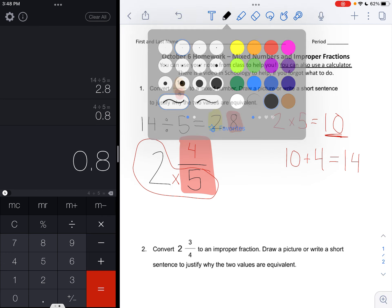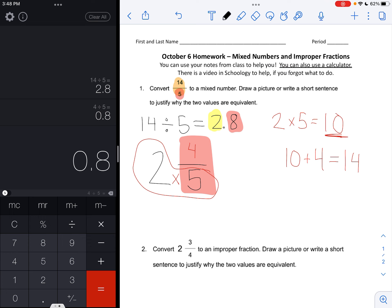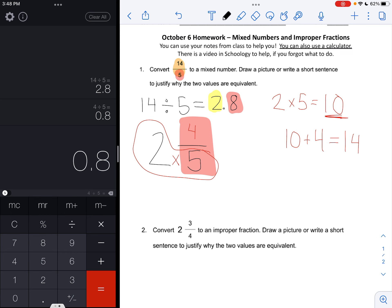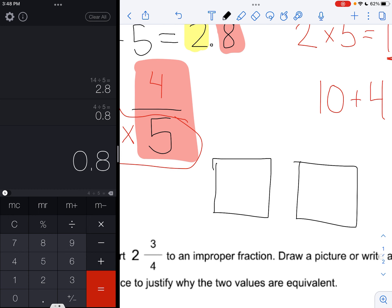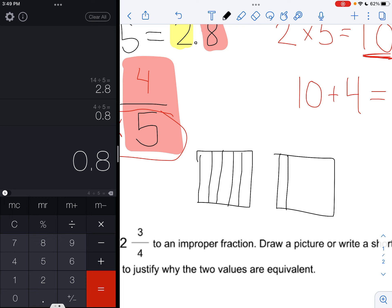So the last thing that this question asks you to do is draw a picture or write a short sentence to justify why the two values are equivalent. So a picture that you might draw is, well, I see that I have 2 wholes. So I would have 2 wholes: 1 whole, 2 wholes. And I see that the denominator is 5, so these wholes should be split into 5 equal sized parts. So 1 part, 2 parts, 3 parts, 4 and 5. So we have 5 equal parts here, and then we do the same thing with this: 1, 2, 3, 4, 5.